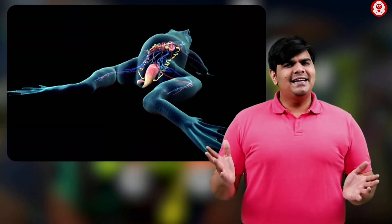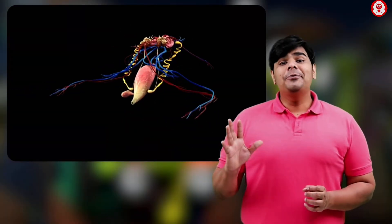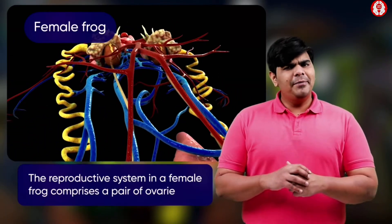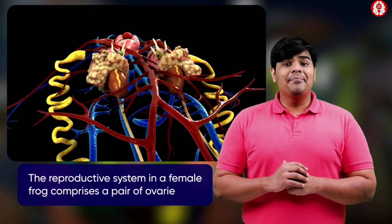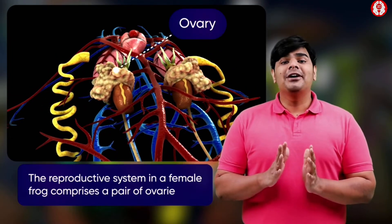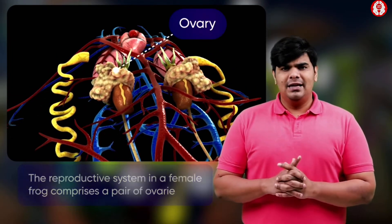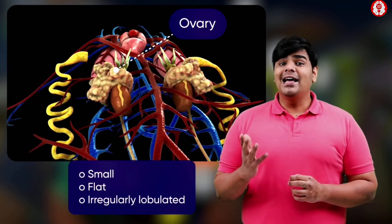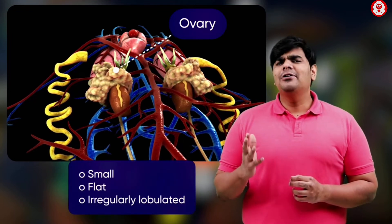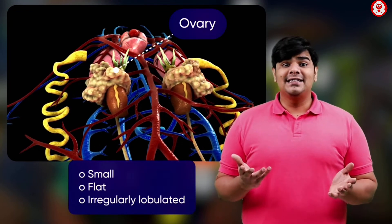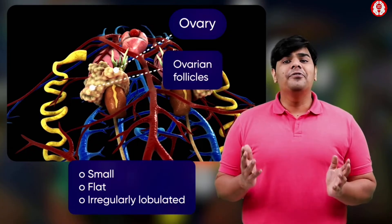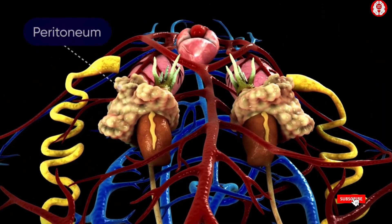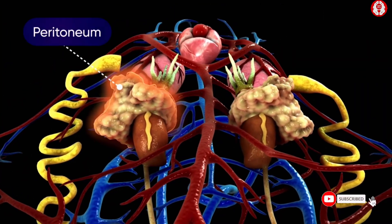Now let us take a look at the reproductive organs of a female frog. A female frog possesses a pair of ovaries as the principal reproductive organs. Each ovary is a small, flat, yellow-coloured, irregularly lobulated structure consisting of a number of ovarian follicles. It is enveloped by a thin layer of peritoneum.